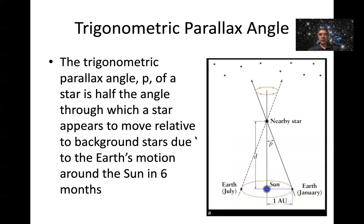So this leads us to the definition of the parallax technique. So what we're trying to do is measure this small angle here, which I'm calling P, so the angle of parallax. And we can define that here in words. So the trigonometric parallax angle P of a star is half the angle through which a star appears to move relative to background stars due to the Earth's motion around the Sun in six months.